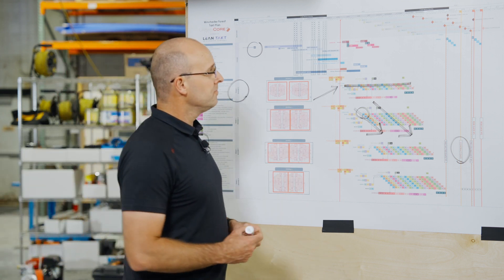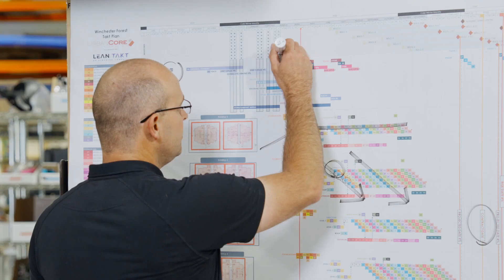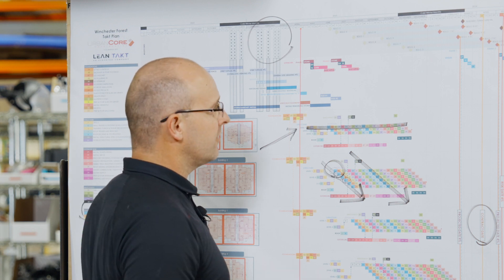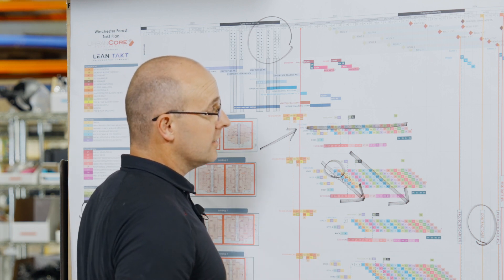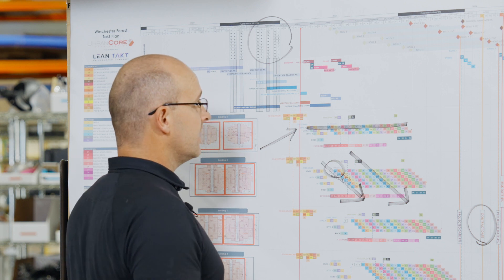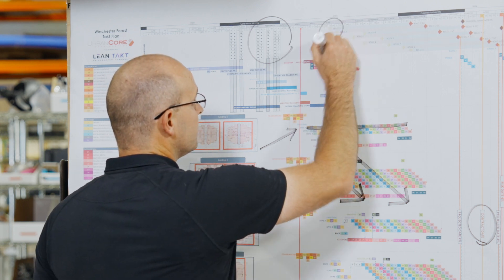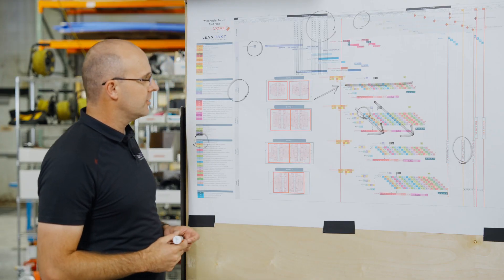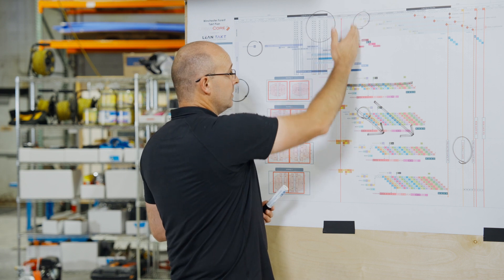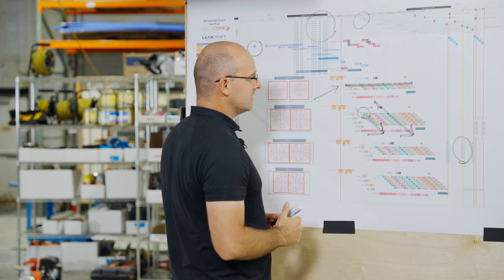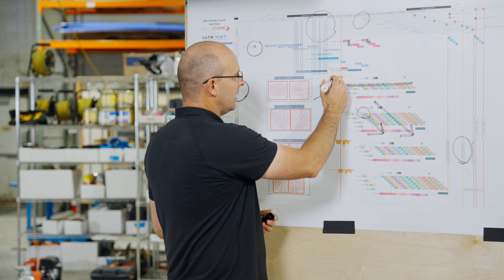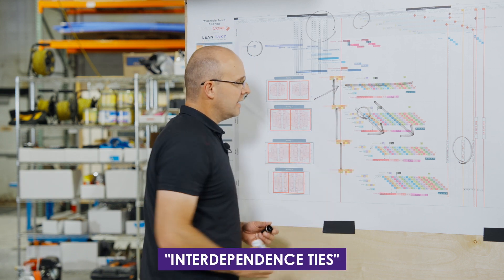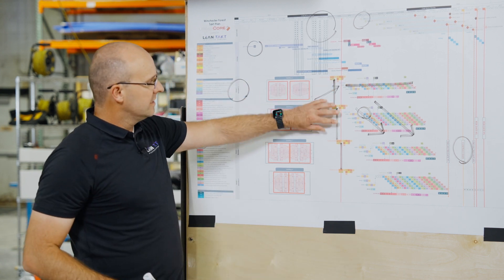A couple more things you need to know. On the top, you will see specific types of days — whether they're weather days or buffer days. You will see things like holidays, whether it's Christmas, Thanksgiving, or the Fourth of July. You will see summaries and milestones up at the top — these identify where they happen in the schedule. And then from phase to phase, you have interdependence ties, which list and line out the connections from phase to phase.